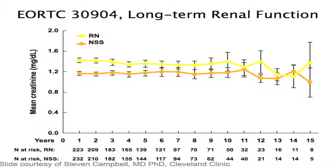In the soon-to-be-published renal functional results from that study, although radical nephrectomy patients had a slightly higher postoperative creatinine on average, it did not deteriorate over time and appeared to improve. Although there were differences at GFRs of 60 and 45, for lower GFRs representing more severe chronic kidney disease, there was very little difference between radical nephrectomy and nephron-sparing surgery.